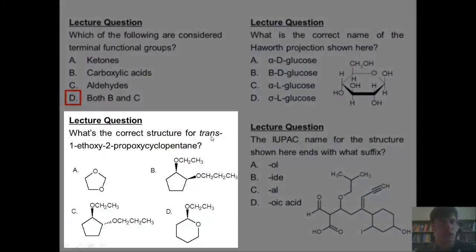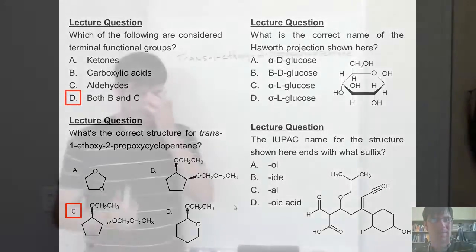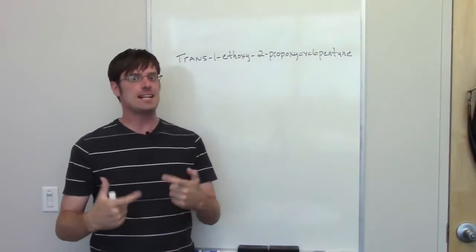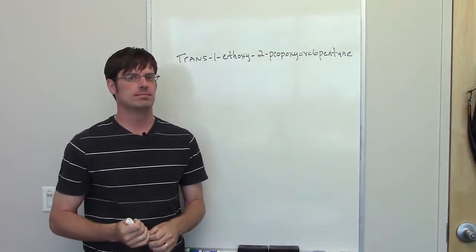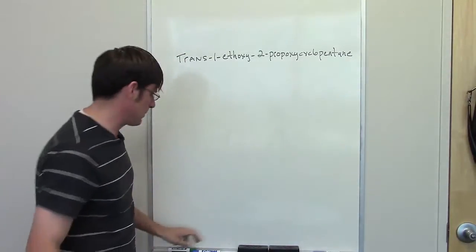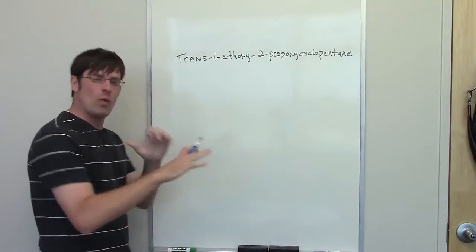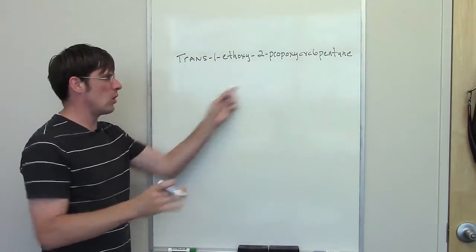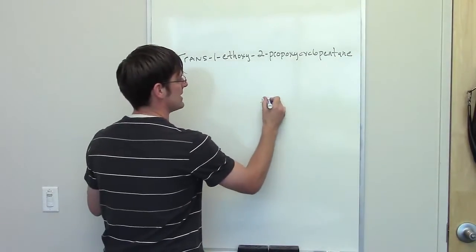we're asked what the correct structure is for this IUPAC name. The correct answer is C. If you want to know why, stay tuned right now. Another exciting IUPAC problem. Okay, look. When doing an IUPAC problem, you have to remember that the way all of these names are organized is we have the parent chain written